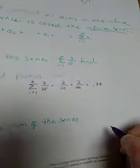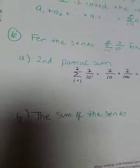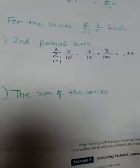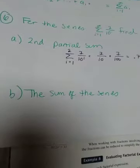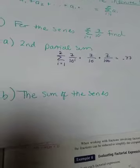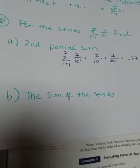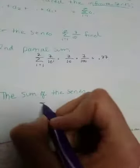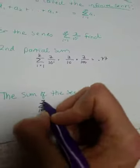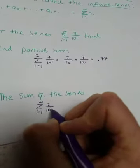Okay, wonderful. That's it. Now, what if I asked you for the sum of the series? So that means the infinite, an infinite series. So the sequence is not ending here. All right, so that's really saying the summation of i equals 1 to infinity of 7 over 10 to the i.